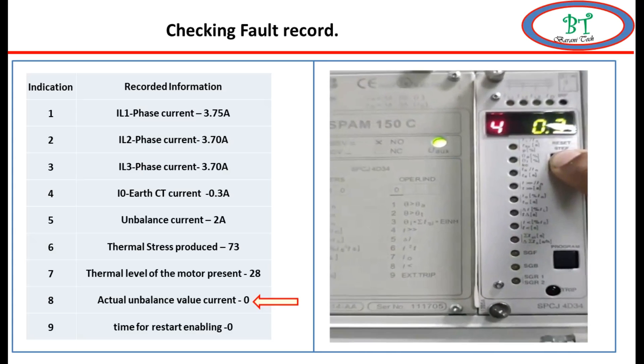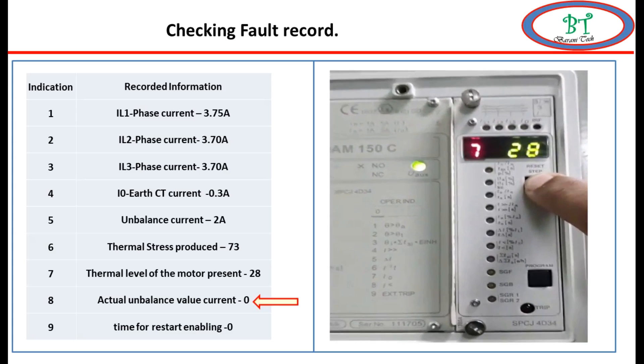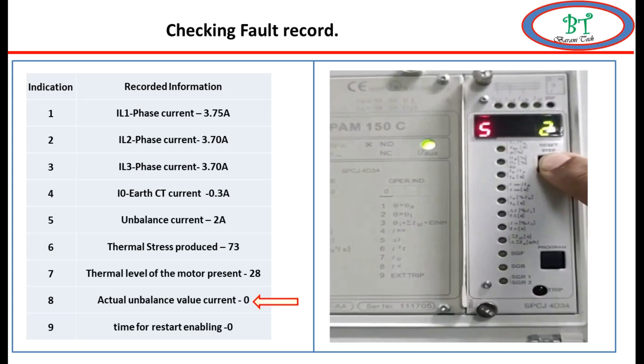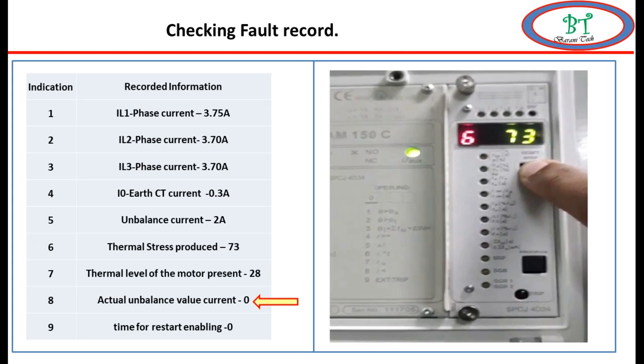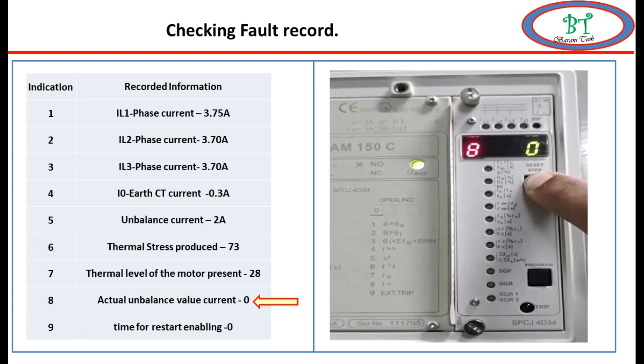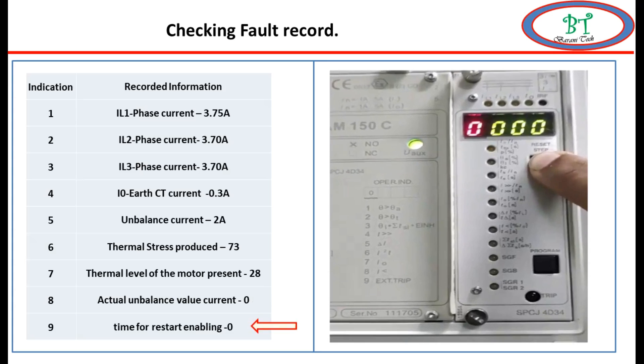Eighth is actual unbalanced current value. When the motor is running, during the running time, we can go to this eighth point and we can see the actual metering value of the unbalanced current.